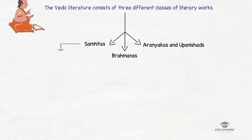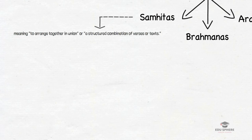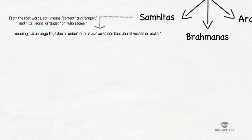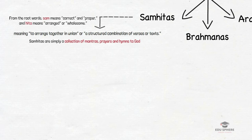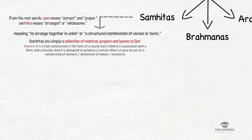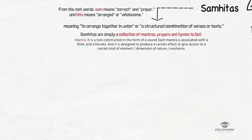The first subdivision of Vedas are the Samhithas. Samhitha is a Sanskrit word meaning 'to arrange together in union,' from the roots 'Sam' (correct and proper) and 'Hita' (arranged or wholesome). The Samhithas are simply a collection of mantras, prayers and hymns to God — the first and customarily the main part of the Veda. Remember that Samhitha is not a teaching; it is simply a collection of mantras.